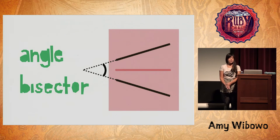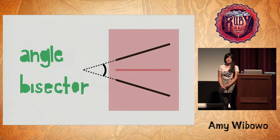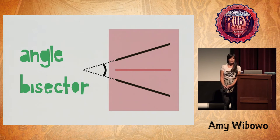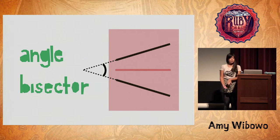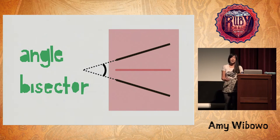If you extended those lines until they met somewhere off of the piece of paper, you would see that specifically we're folding along the angle bisector of those two lines. Folding along the angle bisector is how we get lines to line up.